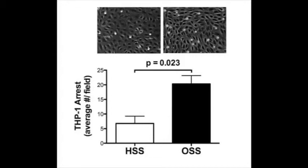Hake monolayers conditioned with oscillatory shear stress exhibited 3-fold greater THP1 cell recruitment compared to monolayers that experienced a high shear stress.